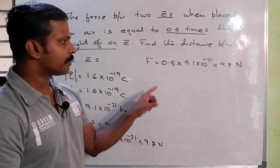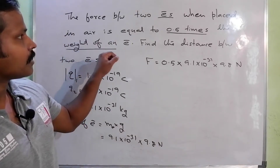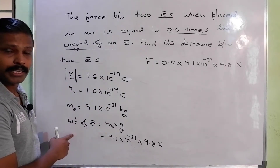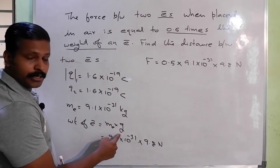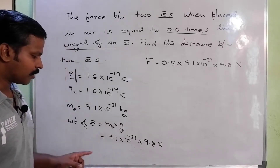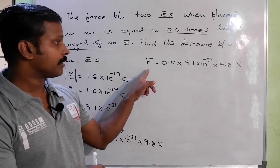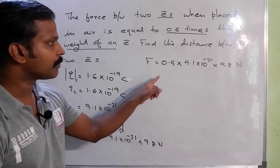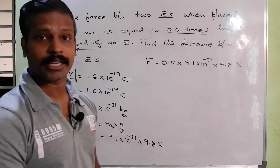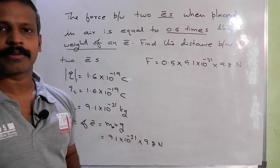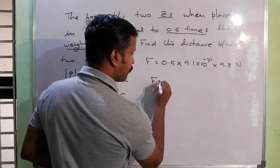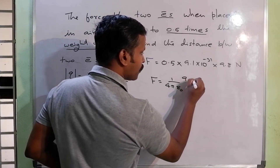This is the force. The force in air is 0.5 times the weight of an electron. Using the mass, the weight of an electron is mass into acceleration due to gravity: 9.1 into 10 raised to minus 31 into 9.8. So F equals 0.5 into 9.1 into 10 raised to minus 31 into 9.8 N. Now, F equals 1 over 4 pi epsilon-0 times Q1 Q2 divided by r squared.